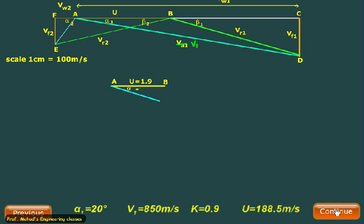Now alpha_1 is equal to 20, so we will construct alpha_1 equal to 20, and on this one we will take distance equals to 8.5 that represents the velocity V_1. And then I complete the right angle triangle using these two.